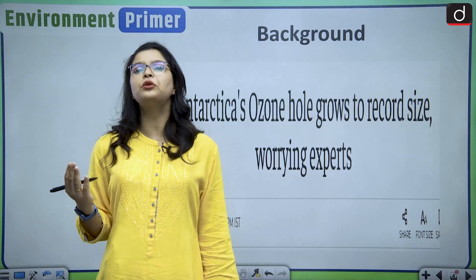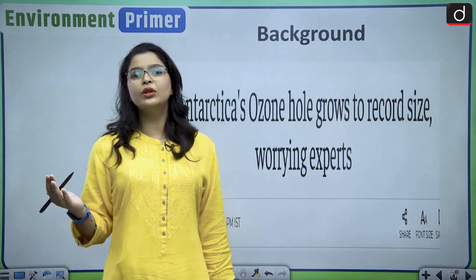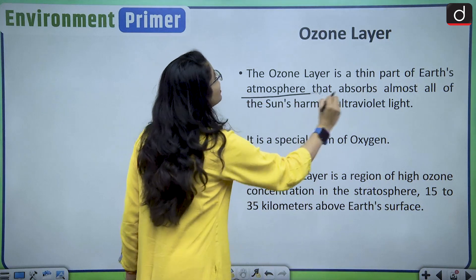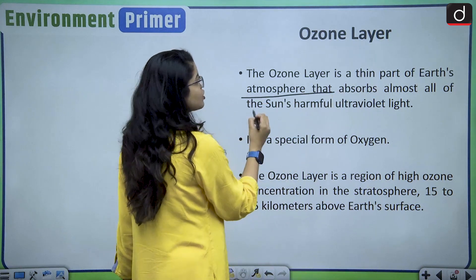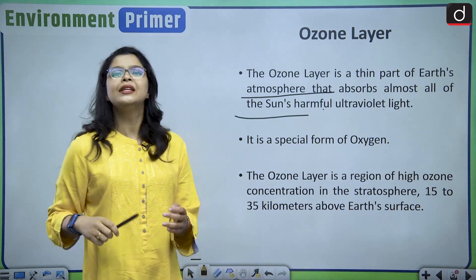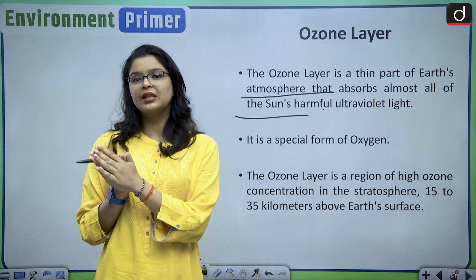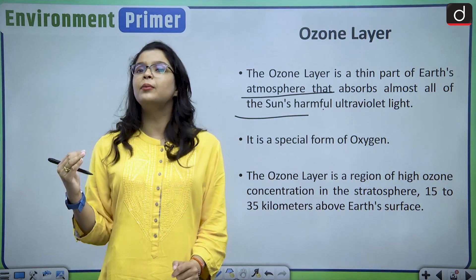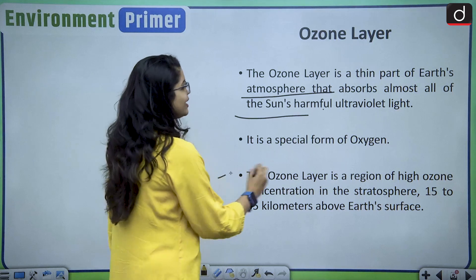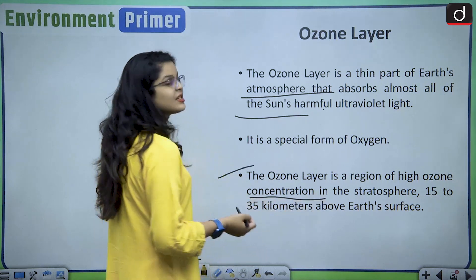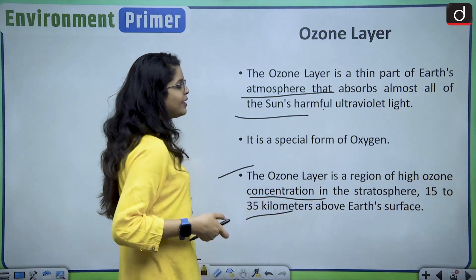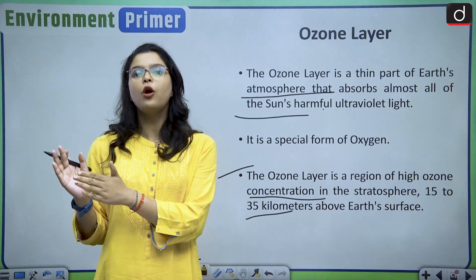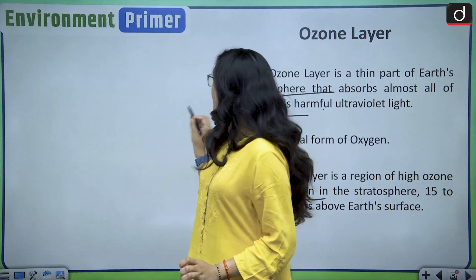Now let us discuss what is this ozone layer. The ozone layer is a very thin part of the earth's atmosphere that absorbs almost all of the sun's harmful ultraviolet light. The ozone layer is a region of high ozone concentration in the stratosphere, 15 to 35 kilometers above the earth's surface. It is a very special form of oxygen and its chemical formula is O3.